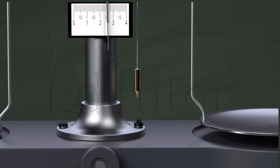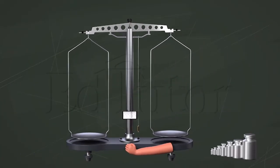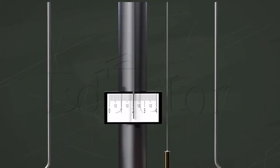We then raise the beam gently by turning the arresting knob clockwise. Using balancing screws at the ends of its beam brings the pointer at zero position.